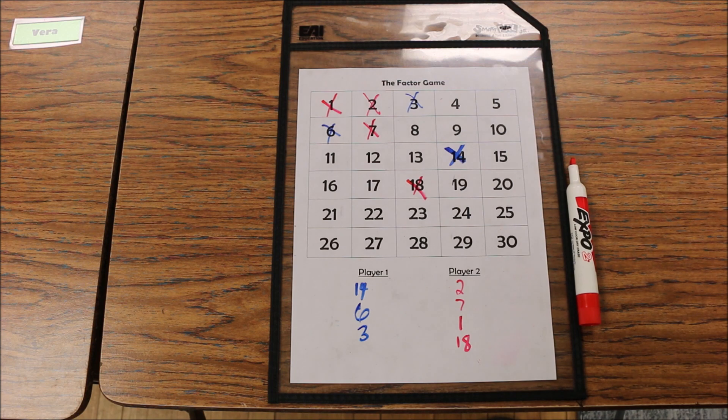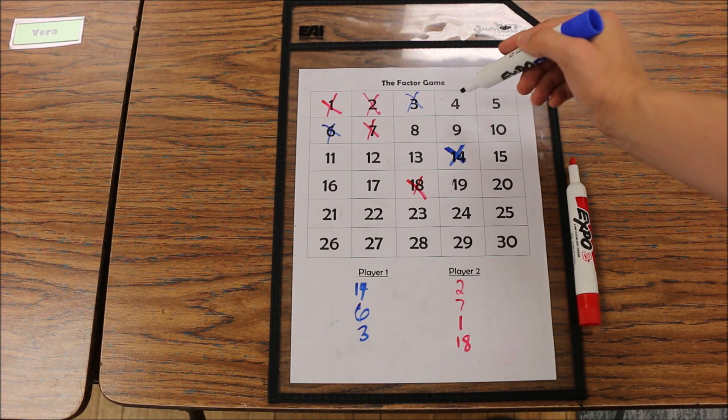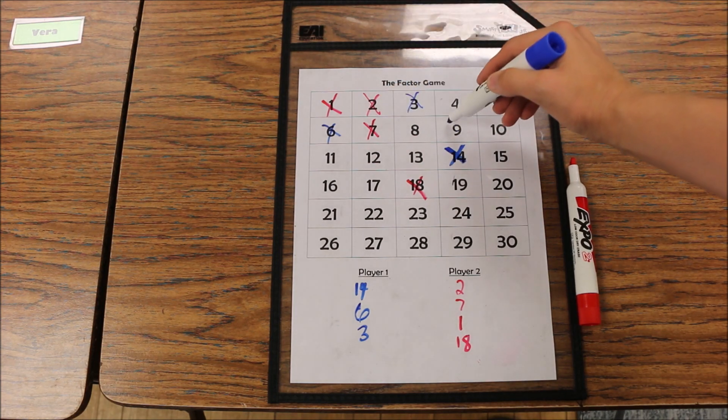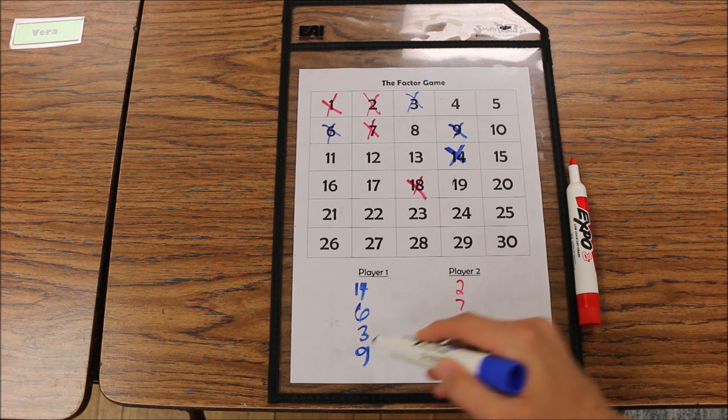2 times 9 is also 18, and that makes them factors of 18. But since 2 is already marked, you can't mark that one, but you can mark 9, so then player 1 gets 9 points.